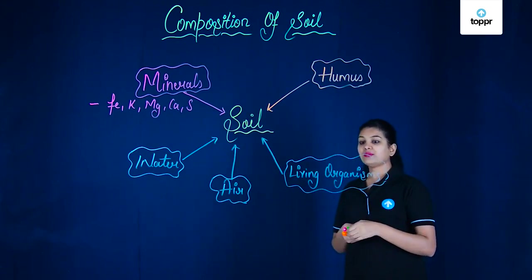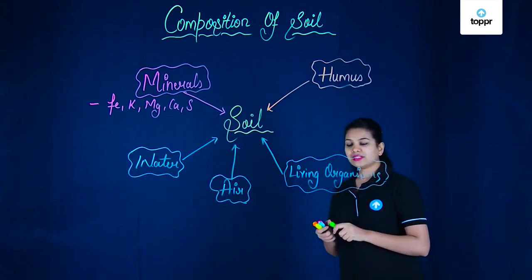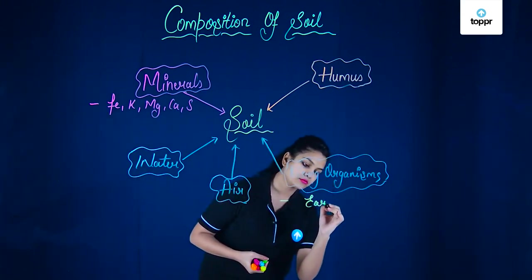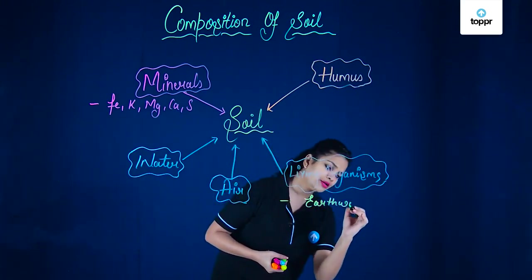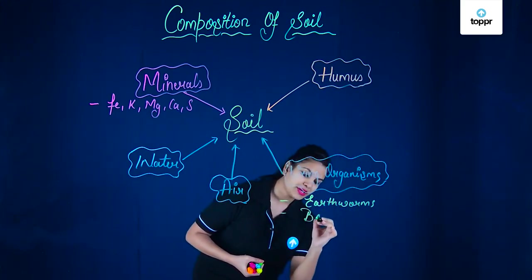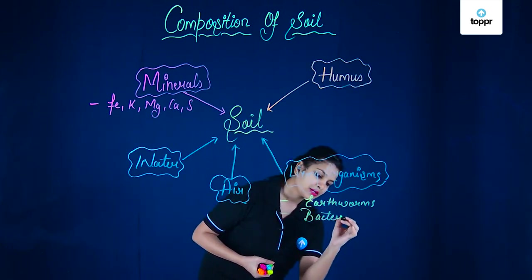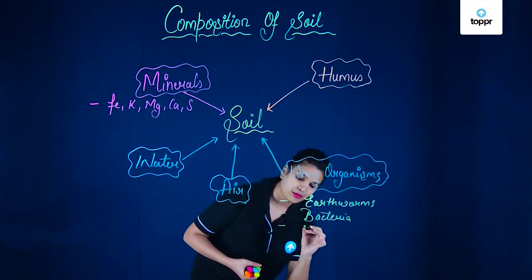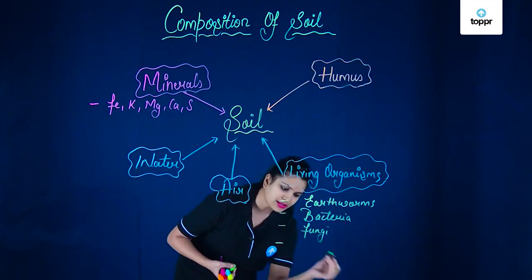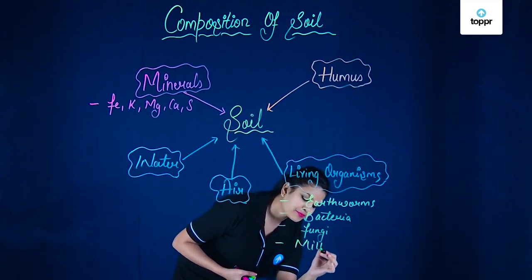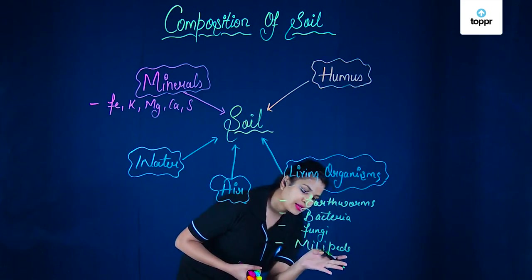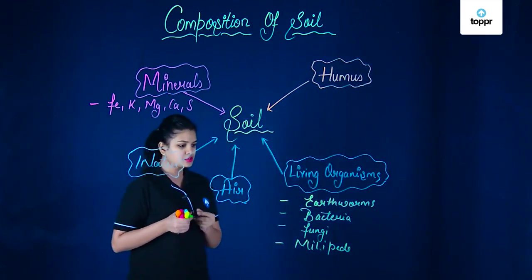Now coming to the living organisms and seeing them in detail, here we observe that these living organisms they can be earthworm. We all know what are earthworms. Besides earthworms there can be microscopic bacteria, there can be fungi, also there are a number of other insects present such as millipede and centipede. So these can be found in the soil.